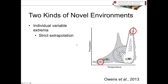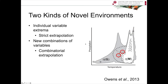That is the simpler kind of extrapolation to identify. The more difficult kind is indicated by the stars, and these are areas where there are new combinations of variables — we refer to this as combinatorial extrapolation. That is, the point falls within the extrema used to train the model, but that particular combination of variables was not given as a possibility to the model. Especially in cases where variables are highly correlated, combinatorial extrapolation may cause issues for transferring your model into a novel habitat.